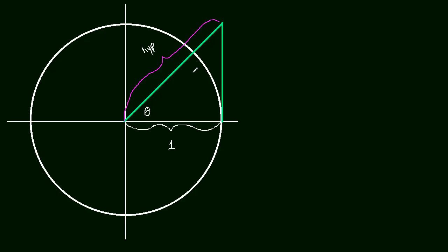And we know that the cosine of this angle, the cosine of that angle, theta, is equal to the adjacent side, adjacent over the hypotenuse.